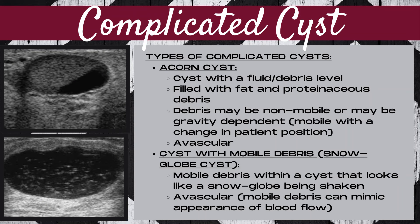There are four types of complicated cysts on a breast ultrasound. The first type is known as an acorn cyst. This is a cyst that has a fluid and debris level, filled with fat and proteinaceous debris. The debris may be non-mobile or gravity dependent, meaning it's mobile with a change in patient position. An acorn cyst should also be avascular.